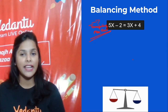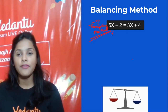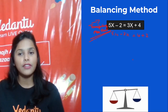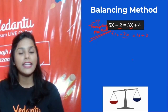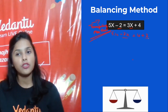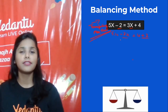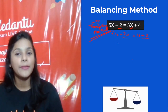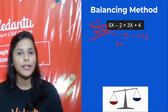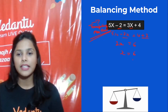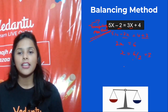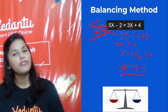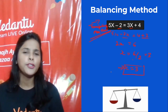Using the transposing method, we take all variables to one side: 5x − 3x = 4 + 2. We transposed 3x to the LHS and −2 to the RHS as +2. So 2x = 6, which gives x = 3. The answer is the same either way!